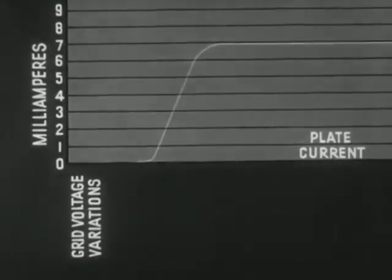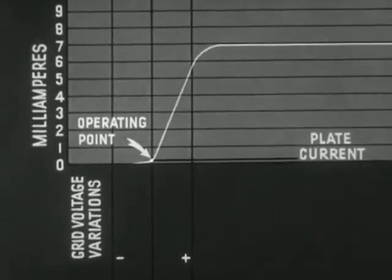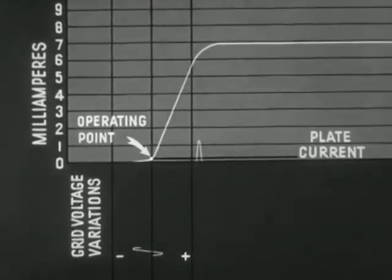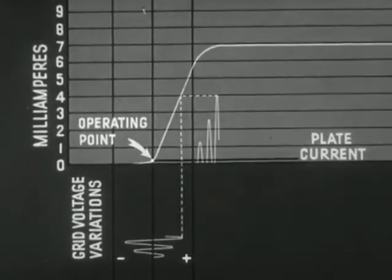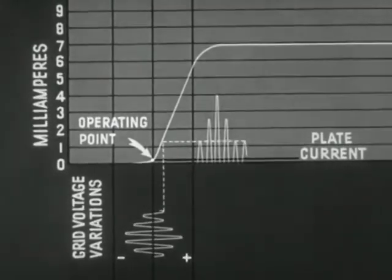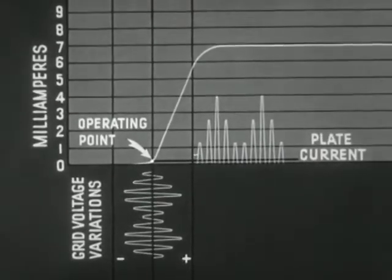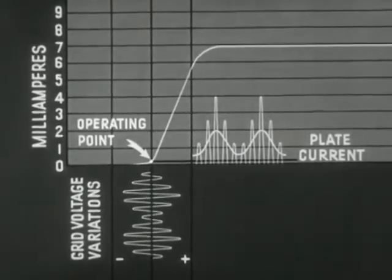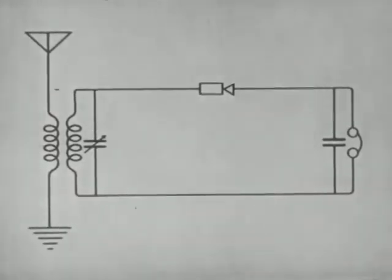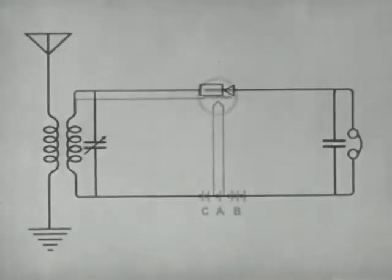The vacuum tube may also be operated as a detector. When used for this purpose, the grid bias is adjusted so that the operating point of the tube is just below the straight portion, or knee, of the characteristic curve. As a result, the positive half cycle of the radio frequency current in the grid circuit is amplified much more than the negative half of the cycle. The average plate current resulting from this unequal amplification will be a direct current pulsating at audio frequency — such a current will operate the earphones. The vacuum tube is more efficient than a crystal detector because it also acts as an amplifier.